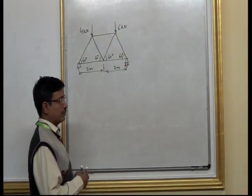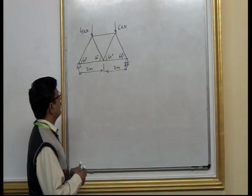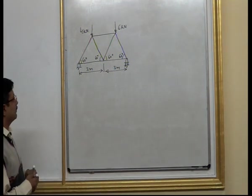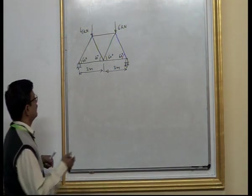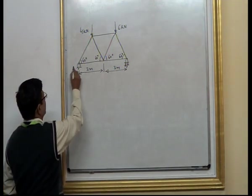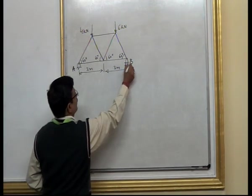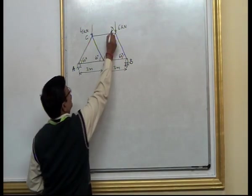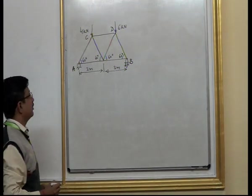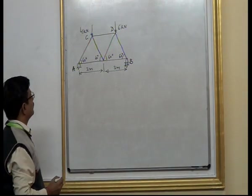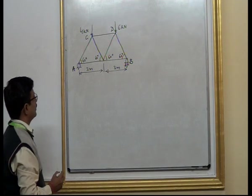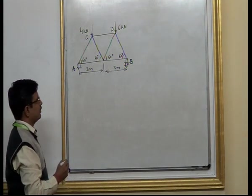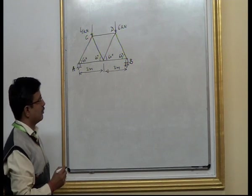Let us understand how to solve a problem using the method of joints. A truss is given to us which has a hinge support at point A and a roller support at B, and C and D are the points where loads are applied. We wish to solve this problem by the method of joints, which is the method we are learning with this problem.